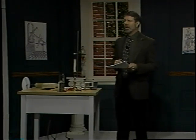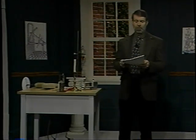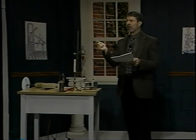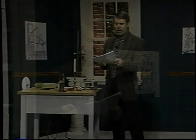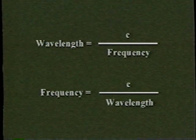Electromagnetic waves all travel 186,000 miles per second — that is, in a vacuum. So you have to specify either the wavelength or the frequency, and you know everything there is to know about those waves. Those two quantities are inversely proportional, so that wavelength is equal to c, the speed of light, divided by frequency, or frequency equals c divided by wavelength.